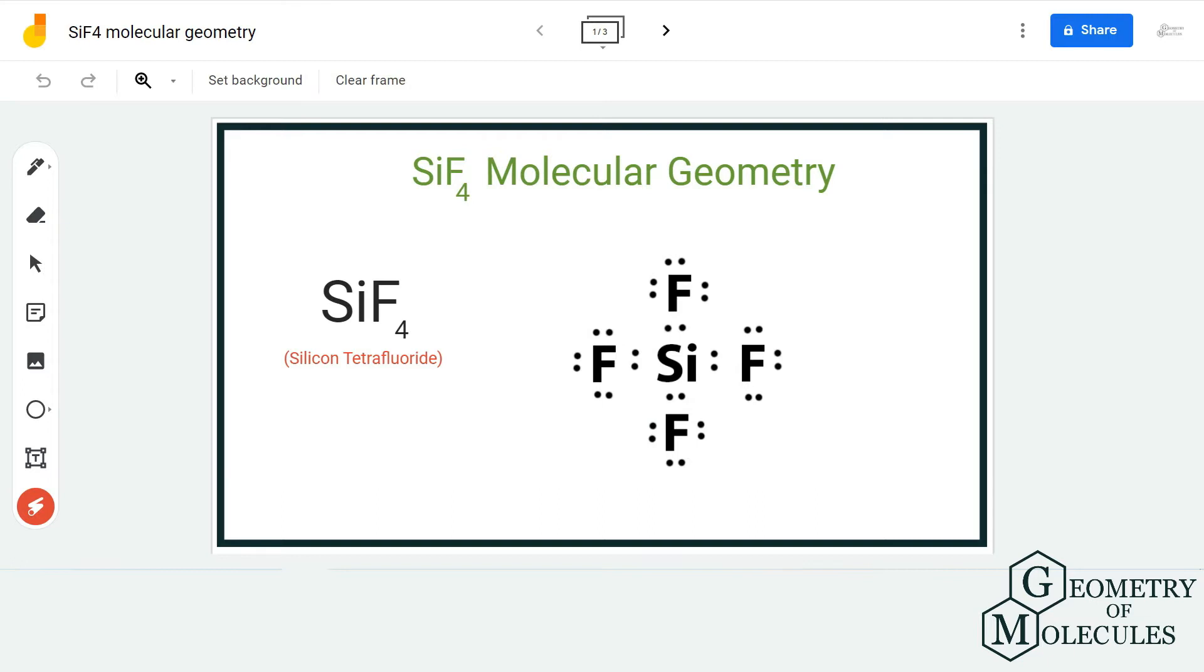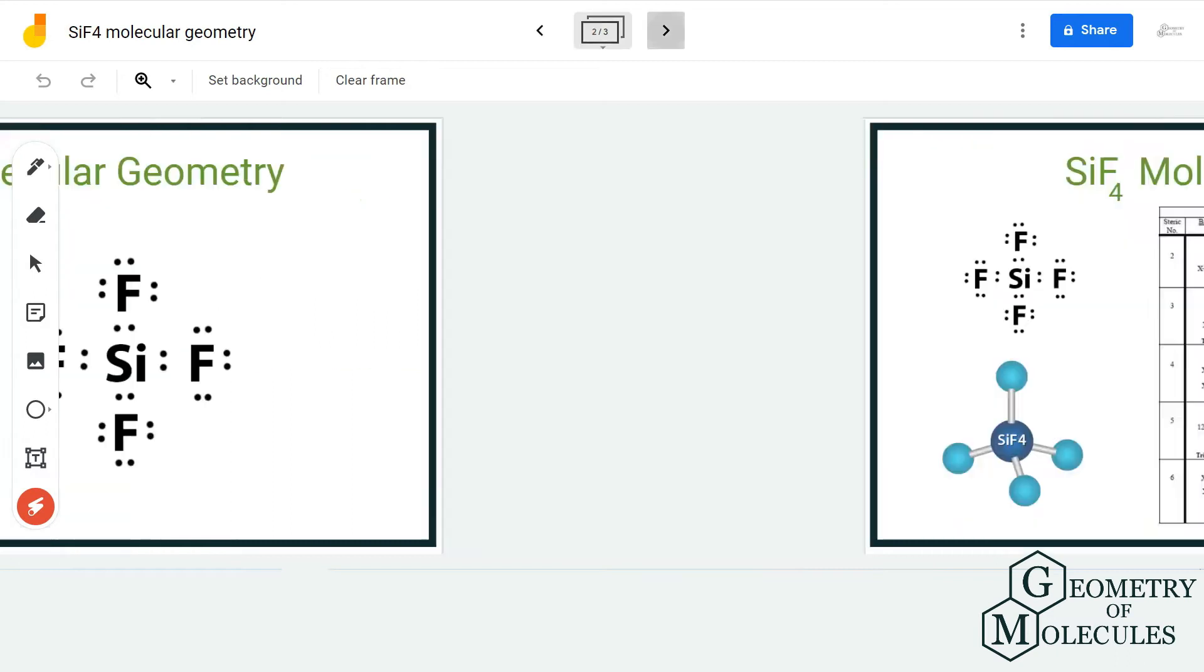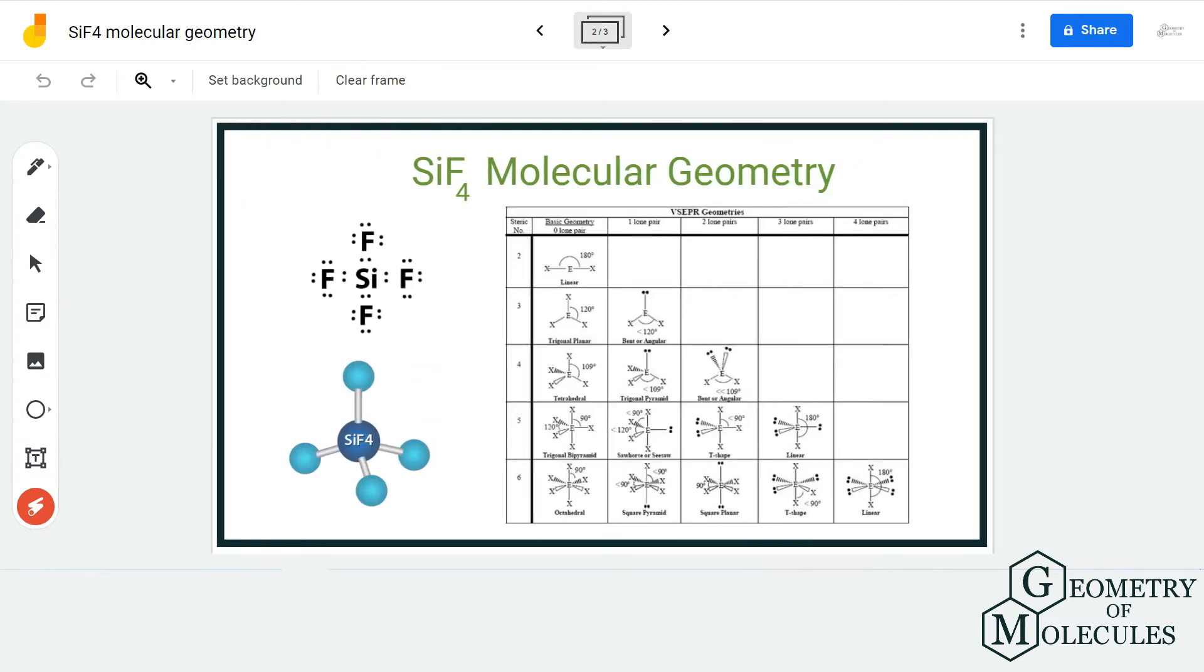better, we need to look at its 3D shape, and then we use the steric number formula or AXN notation to find out its molecular geometry. So all these fluorine atoms, when they bond with